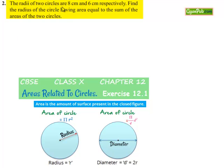Coming to the second question, the radii of two circles are 8 cm and 6 cm respectively. Find the radius of the circle having area equal to the sum of the areas of the two circles.